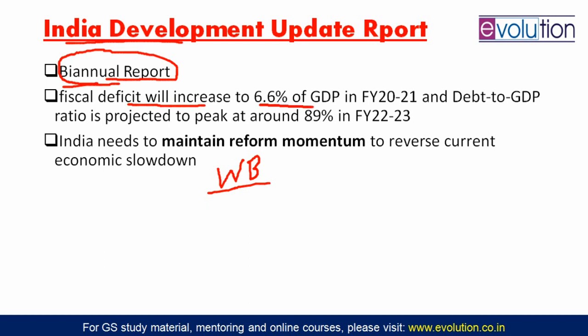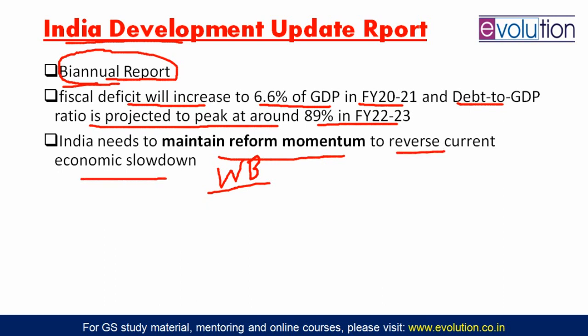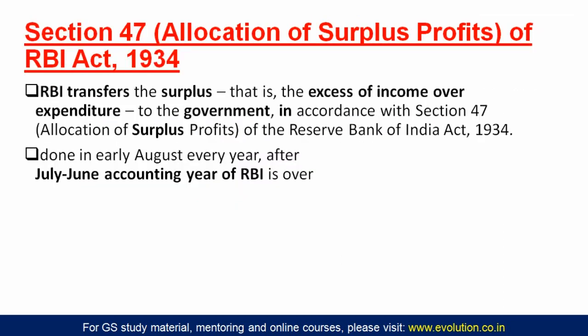This report says that the fiscal deficit of the government will increase to 6.6 percent of GDP in financial year 2021 — we were targeting 3.5 percent. The debt-to-GDP ratio is projected to peak around 89 percent in 2022-23. The report also says that India needs to maintain reform momentum to reverse the current economic slowdown.